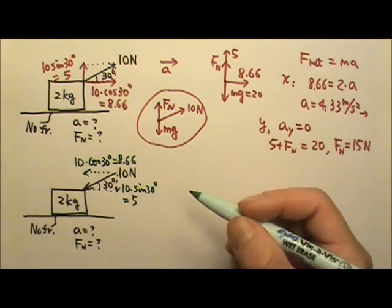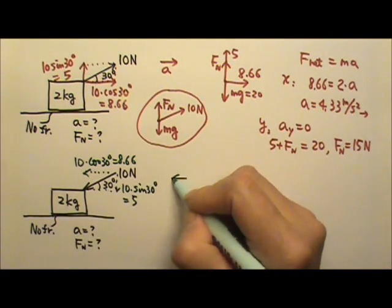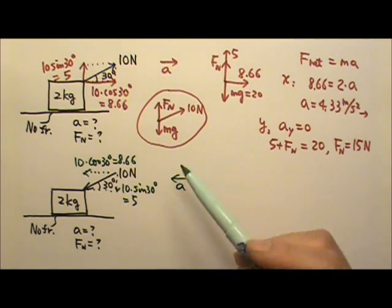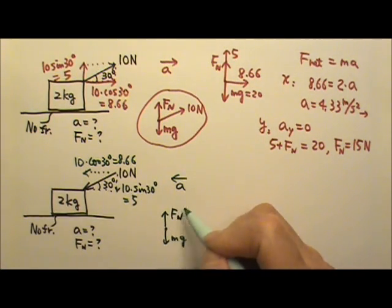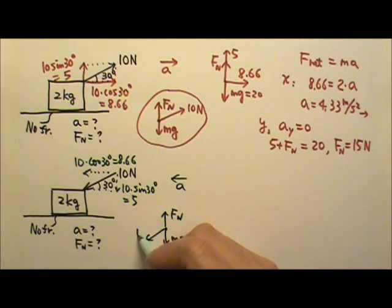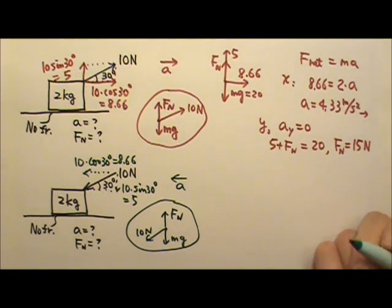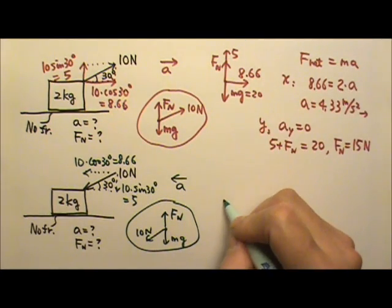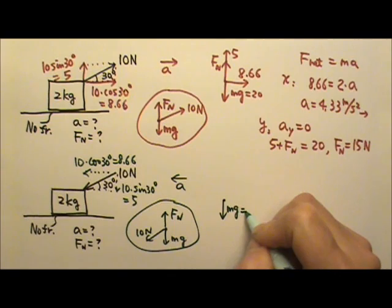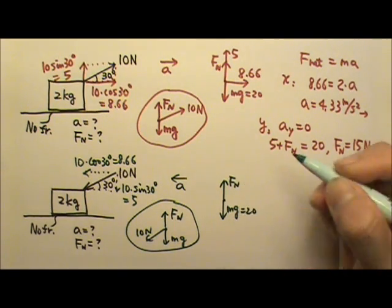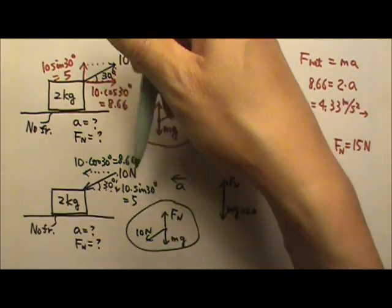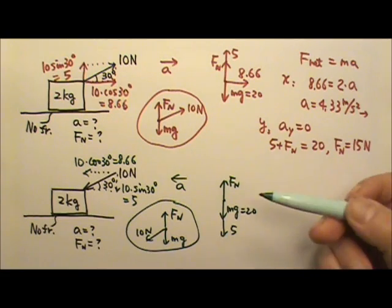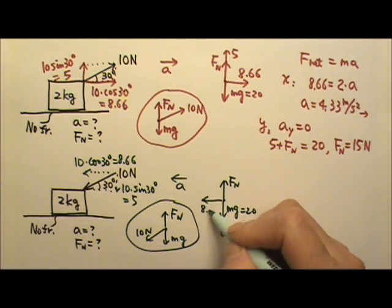The acceleration for this box is going to be to the left. If you draw all the forces acting on the box, you would have MG, the normal force going up, and the slanted force going down. But for problem solving purposes, I'm going to draw the components: MG is 20, normal force up, and instead of the slanted 10, I draw the downward 5 and to the left 8.66.